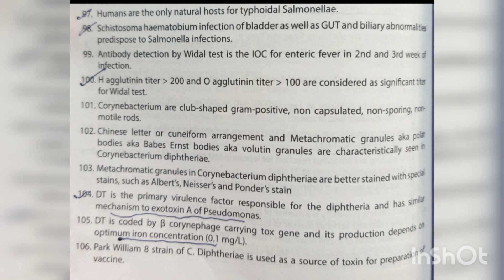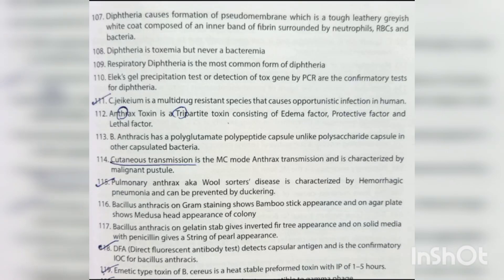Corynebacterium are club-shaped, gram-positive, non-capsulated, non-sporing, non-motile rods with Chinese letter or cuneiform arrangement. Metachromatic granules (polar bodies, Babes-Ernst bodies, volutin granules) are characteristically seen in C. diphtheriae, better stained with Albert's, Neisser's, and Ponder's stains. DT (diphtheria toxin) is the primary virulence factor responsible for diphtheria with similar mechanism to Exotoxin A of Pseudomonas. DT is coded by beta-corynephage carrying tox gene, and its production depends on optimum iron concentration of 0.1 mg/L. Park-Williams 8 strain of C. diphtheriae is used as source of toxin for vaccine preparation.